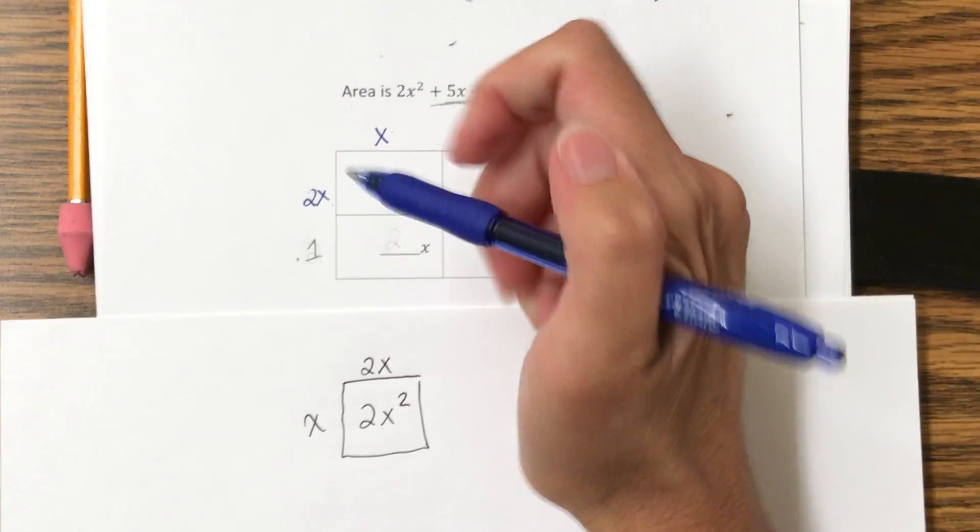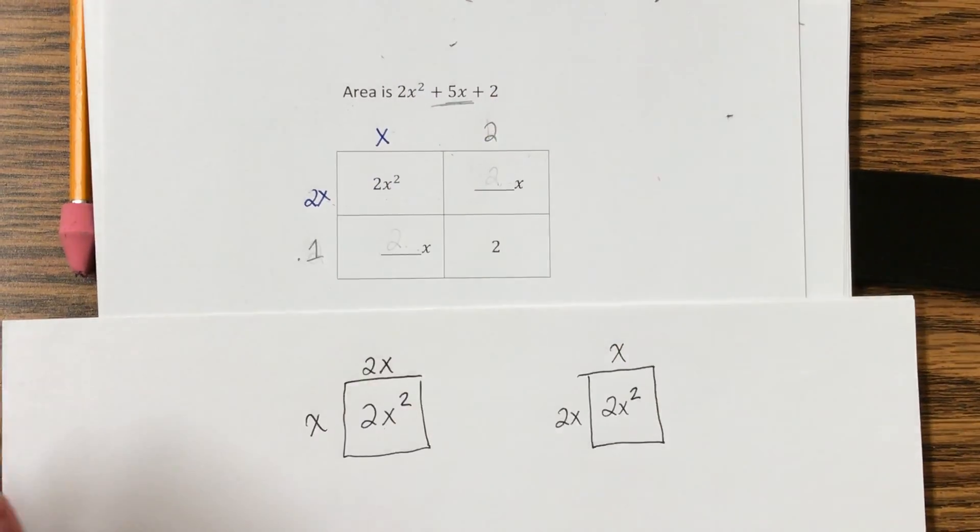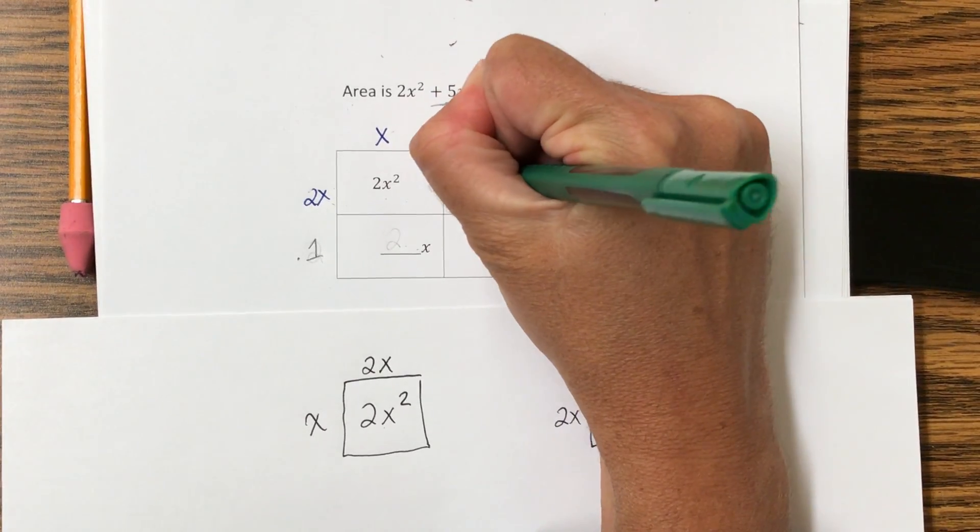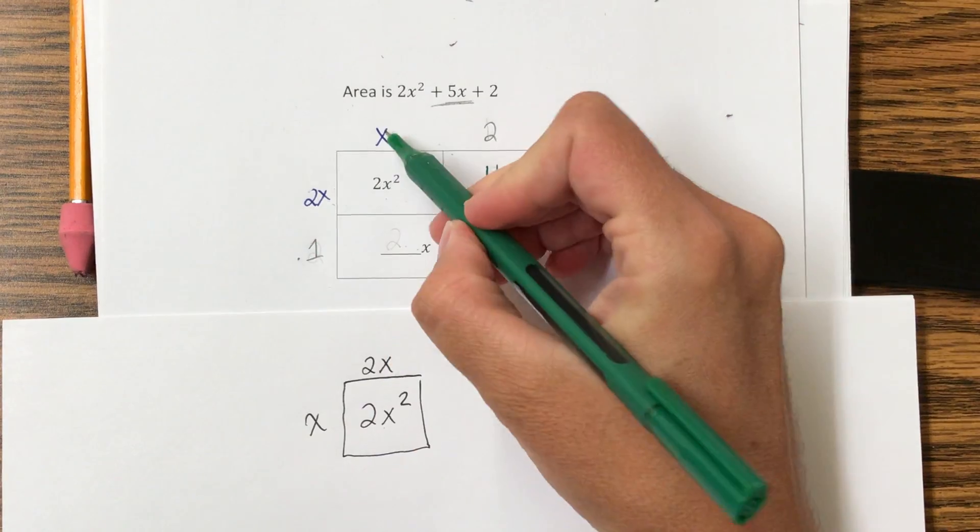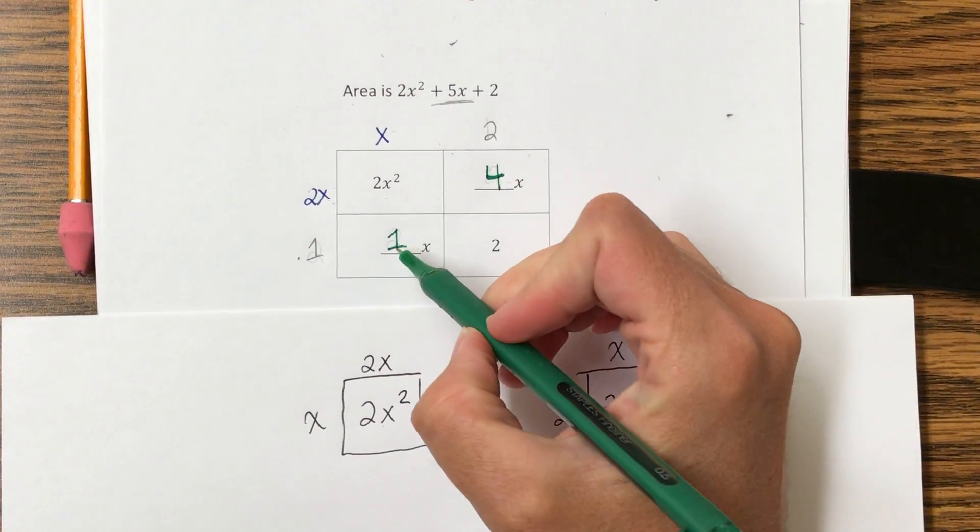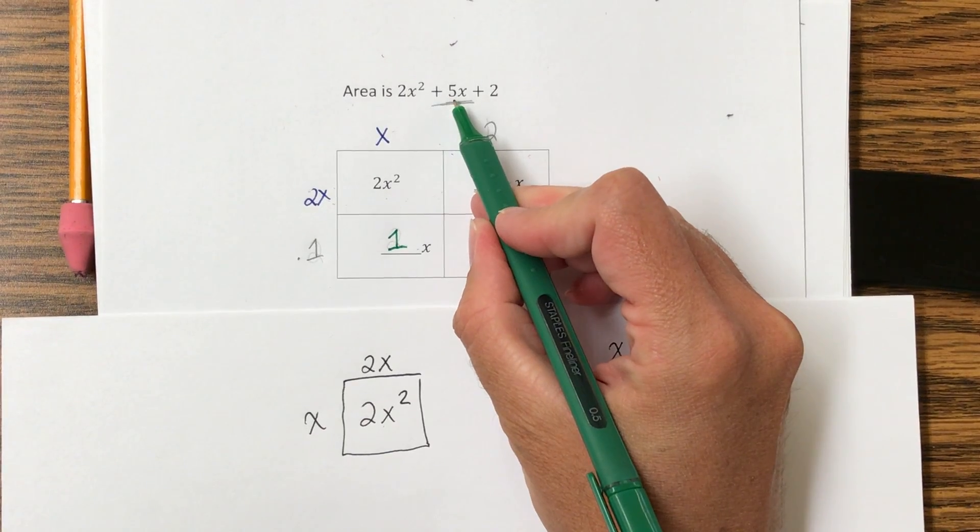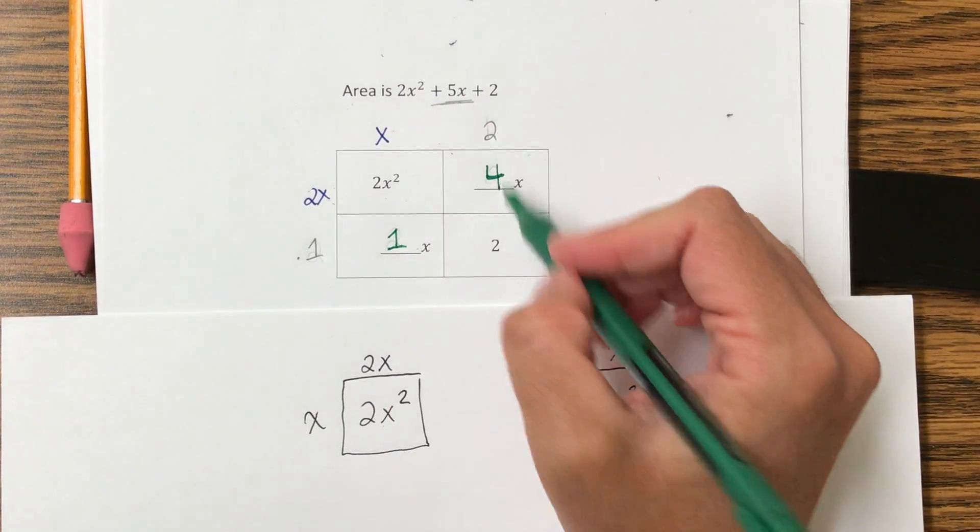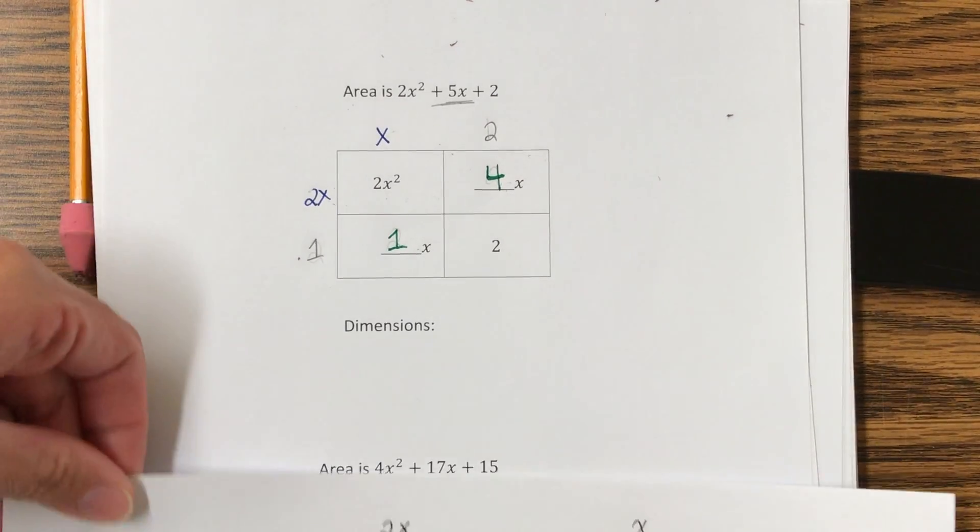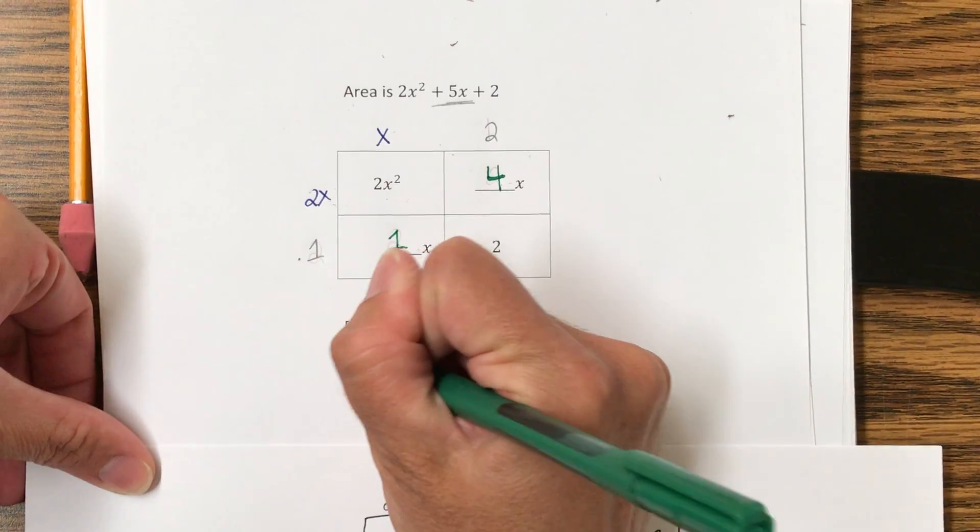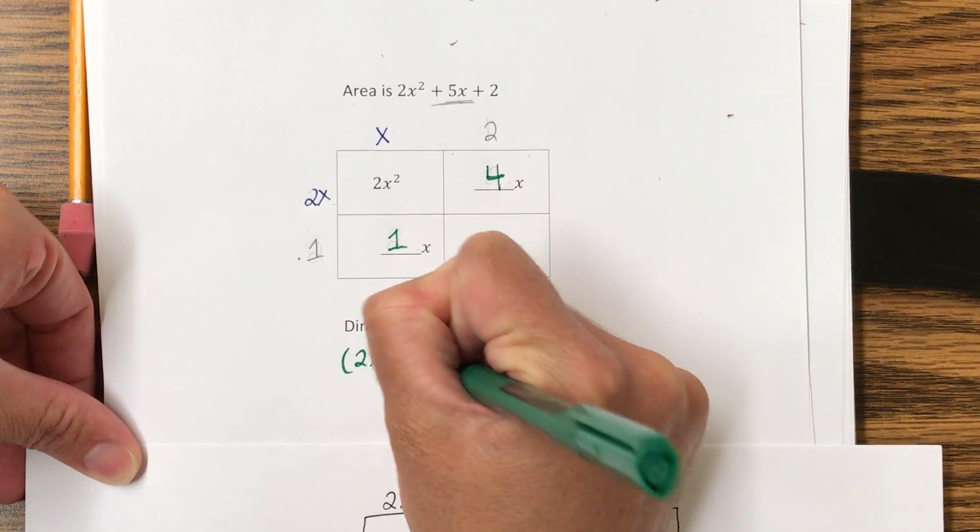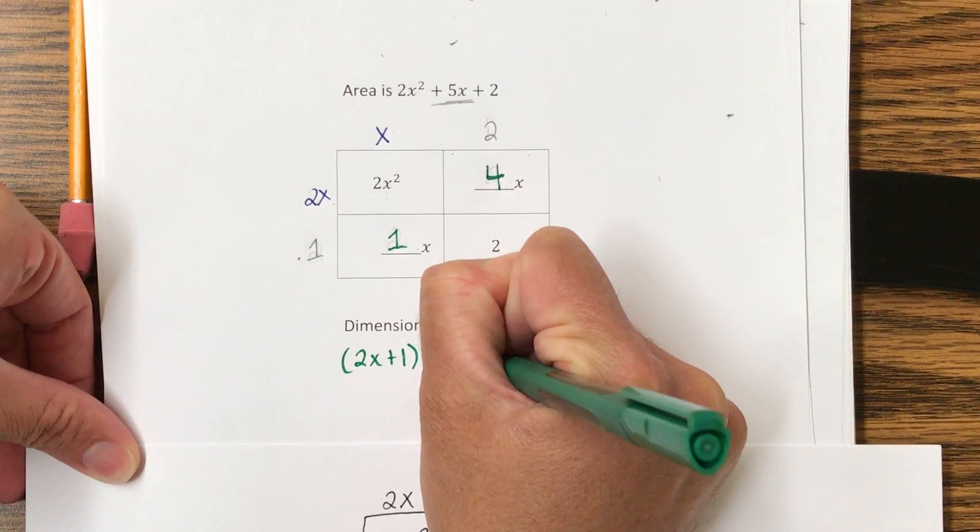So when I do that, 2x times 2 is a 4x. 1 times x is a 1x, and what do you know? 4x and 1x does add to 5x, and then 1 times 2 is 2. So I have my dimensions. My dimensions are 2x plus 1 and x plus 2.